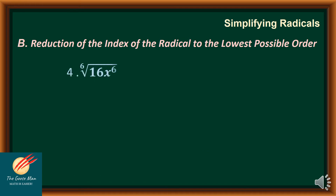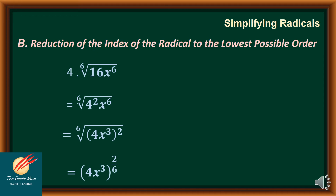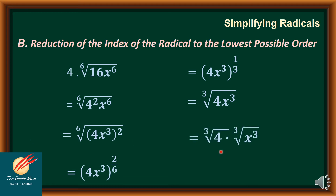Next, we have the 6th root of 16x to the 6th power. First, express 16 as 4 squared times x to the 6th, then take the 6th root. We can express 4 squared times x to the 6th as (4x³)², applying the law of exponents. Converting to exponential form, we can reduce 2 over 6 to 1 over 3. Returning to radical form, we have the cube root of 4x³. Expanding: cube root of 4 times cube root of x³; since cube root of x³ equals x, the final answer is x times cube root of 4.